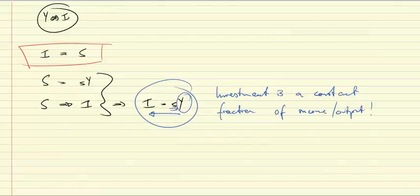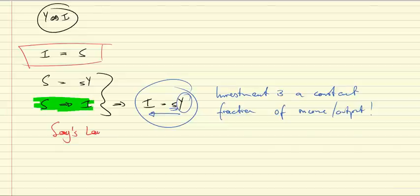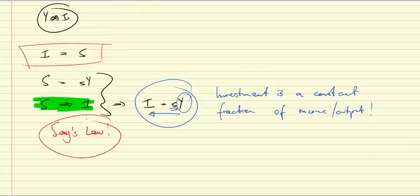Now, this is not an innocent assumption. This is what we call Say's law. Say's law assumes that there's no lack of effective demand, that there's no unemployment of factors. Essentially, all resources, all these savings are utilized to increase productive capacity, so that we are assuming from the get-go that there is no unemployment in the model. That is why we presumably can talk about the long run.